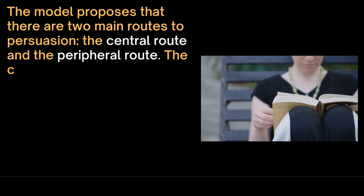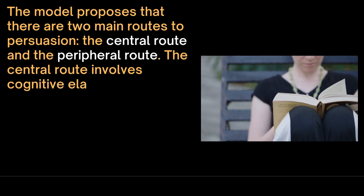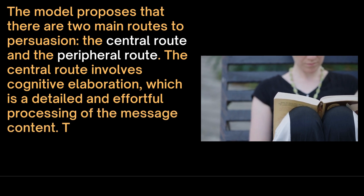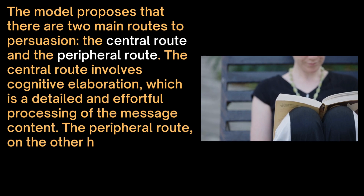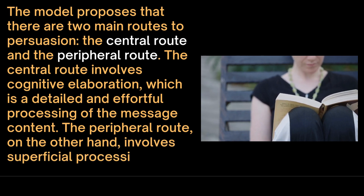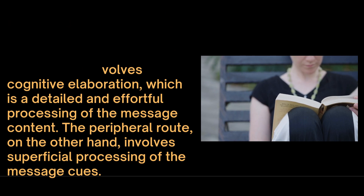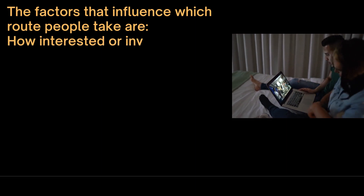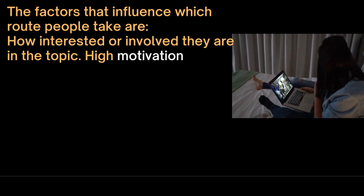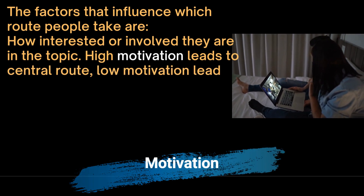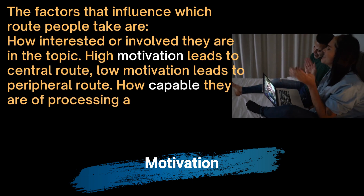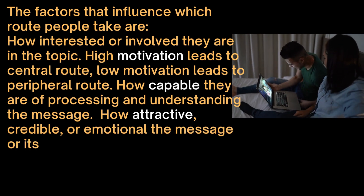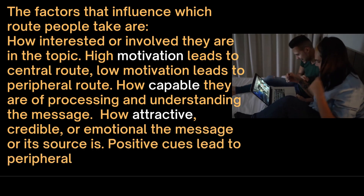The Central Route involves cognitive elaboration, which is a detailed and effortful processing of the message content. The Peripheral Route, on the other hand, involves superficial processing of the message cues. The factors that affect which route people take are: how interested or involved they are in the topic — high motivation leads to the Central Route, low motivation leads to the Peripheral Route. The next factor is ability: how capable they are of processing and understanding the message. Thirdly, how attractive, credible, or emotional the message or its source is.